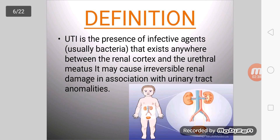Definition: UTI is the presence of an infective agent, usually bacteria, that exists anywhere between the renal cortex and the ureteral meatus. It may cause irreversible renal damage in association with urinary tract anomalies.